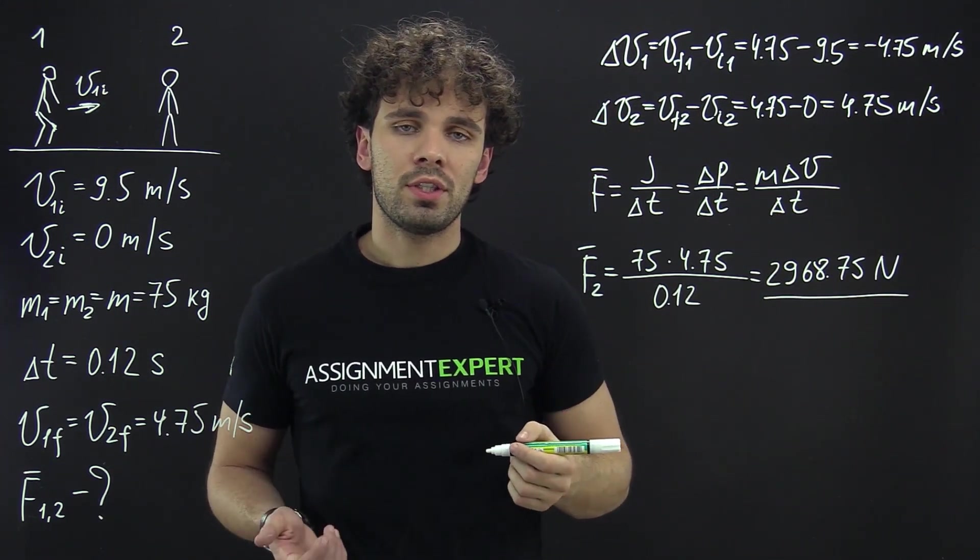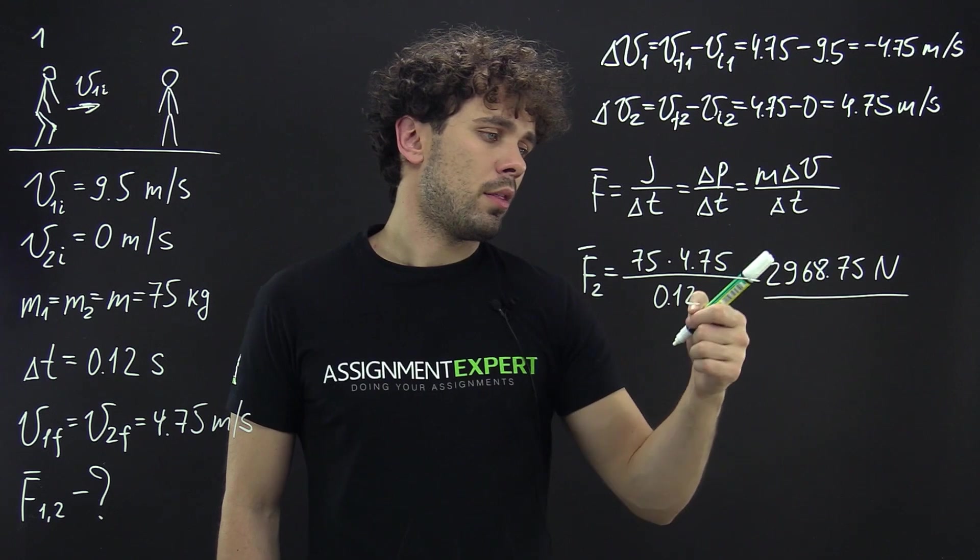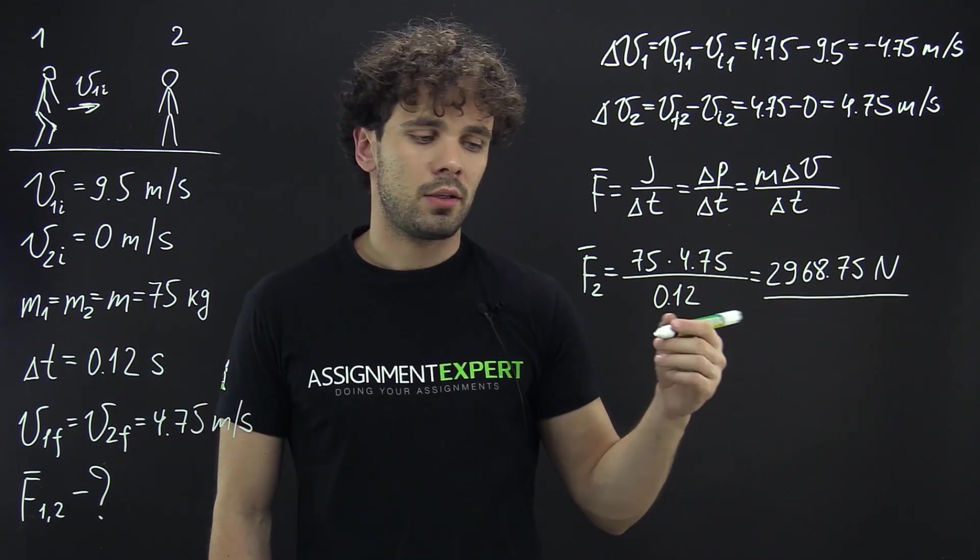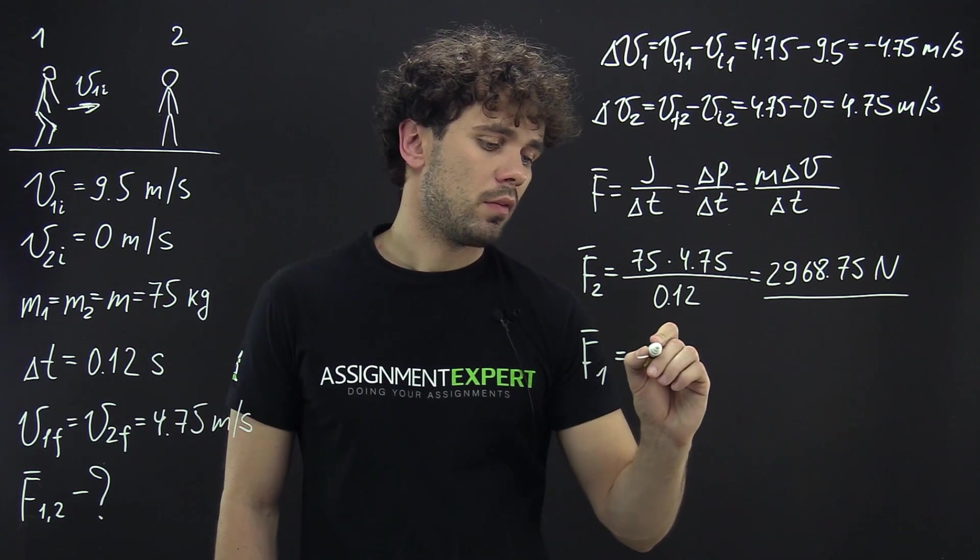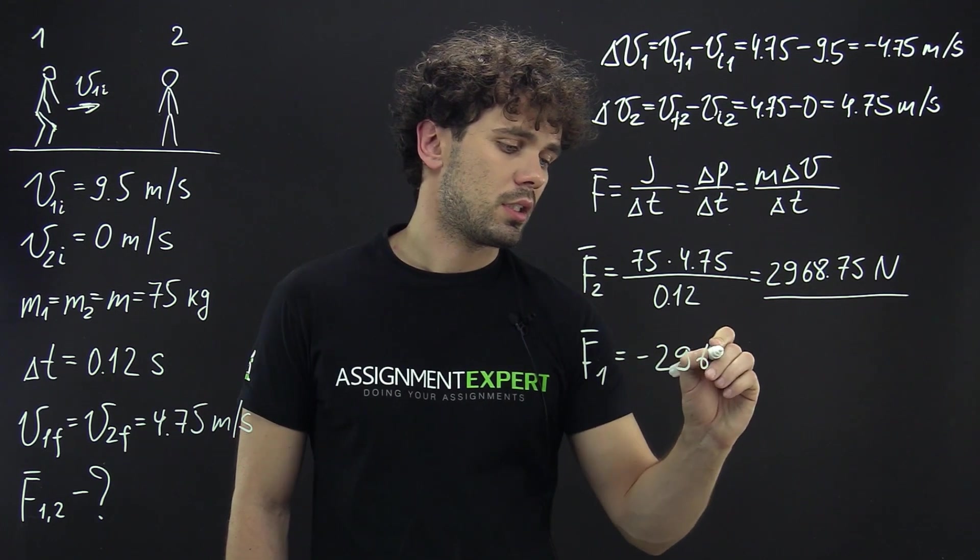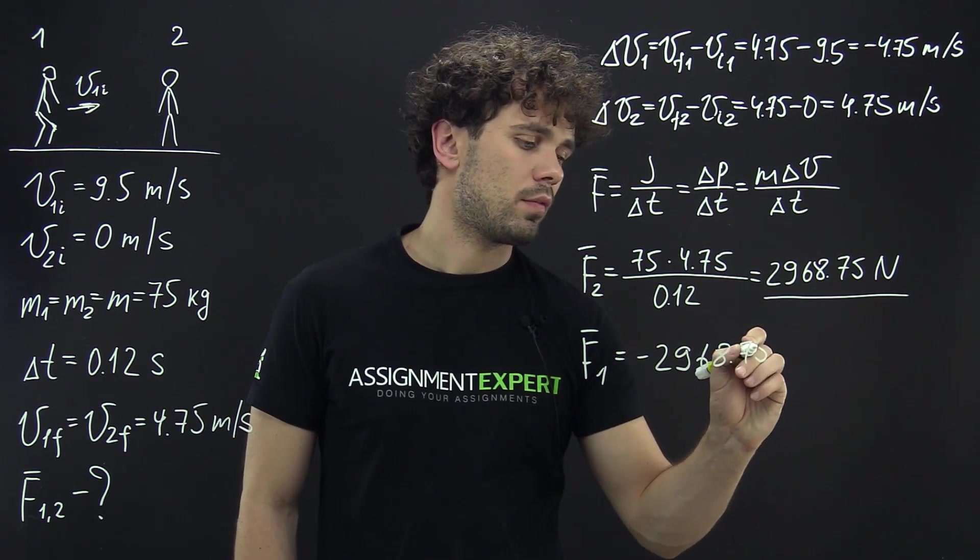And now for the first skater we can simply take this magnitude with the negative sign. So F1 equals negative 2,968.75 newtons.